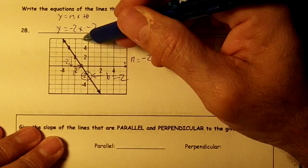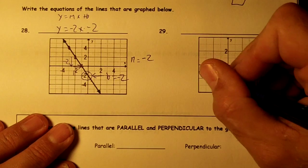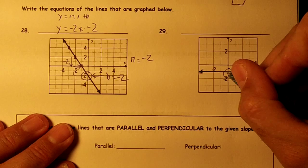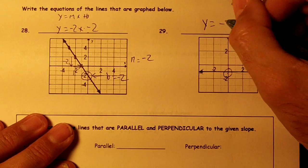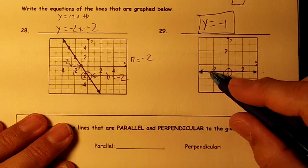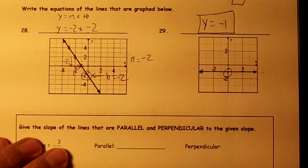Y'all got to be able to go from the graph to the equation. Right here, this is a flat line. It only goes to the y-axis at negative 1. So y equal negative 1. This line doesn't cross the x-axis, so it won't have x in the equation.